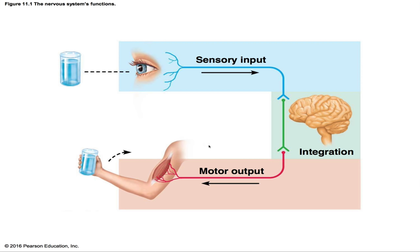The brain then sends a signal — the motor output — to the muscles in the arm, telling them to lift the glass and bring it to the mouth. The brain deciding what to do is the integration step, and sending the signal to the muscles is the motor output.